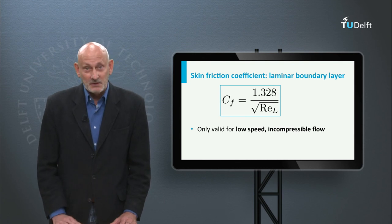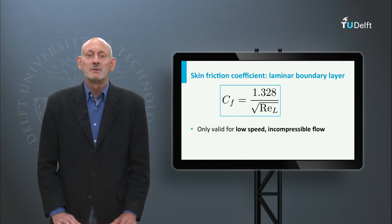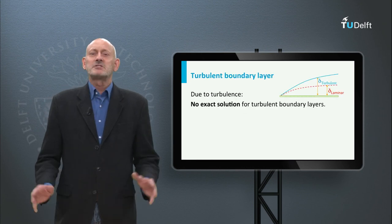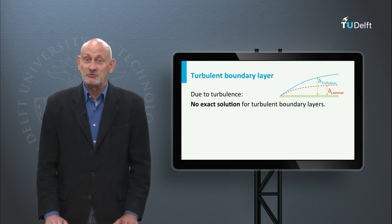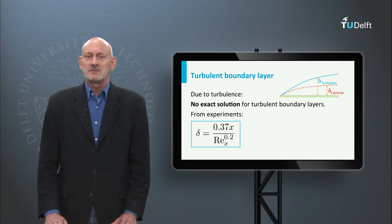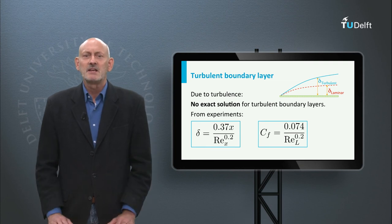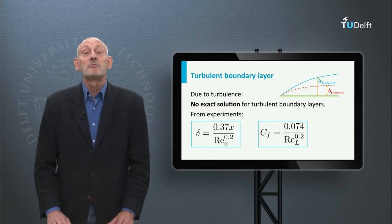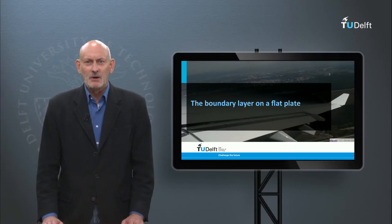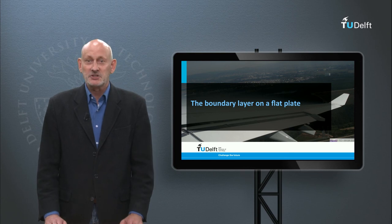This equation is only valid for low speed incompressible flow, and it is reasonably accurate for high speed subsonic flow. Unfortunately, there is no exact solution for the turbulent boundary layer. But experiments showed that the boundary layer is much thicker than for the laminar case, and that the skin friction coefficient inversely varies with the Reynolds number to the power of 0.2. So the friction coefficient in turbulent flow is much higher than in laminar flow, and a turbulent flat plate will have a much higher total skin friction drag.